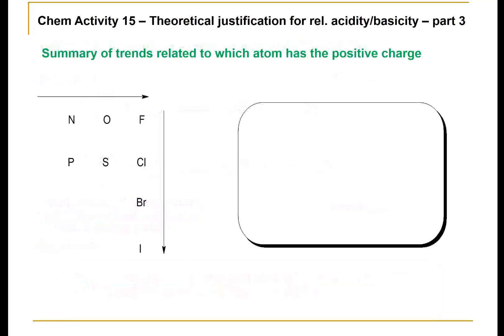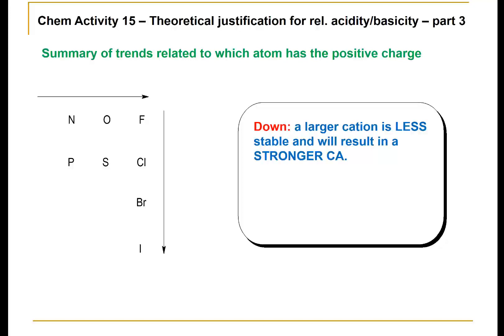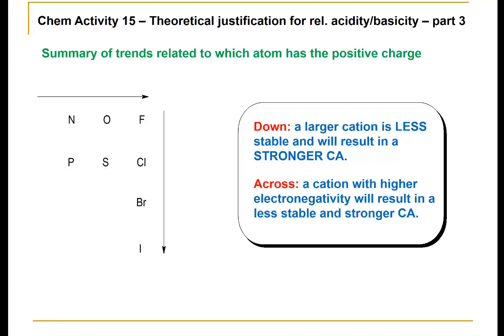It's helpful to summarize these two ideas. This diagram is associated with looking at the atom effect when the atom has a positive charge. Going down the periodic table, we have a larger cationic atom. This larger cationic atom would be less stable, resulting in a stronger conjugate acid. Across the periodic table, the cation with a higher electronegativity will result in a less stable and stronger conjugate acid.